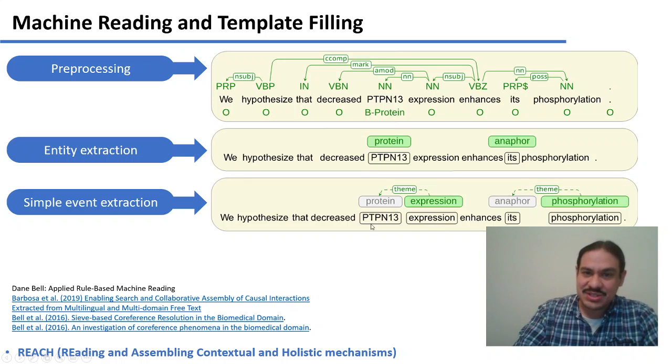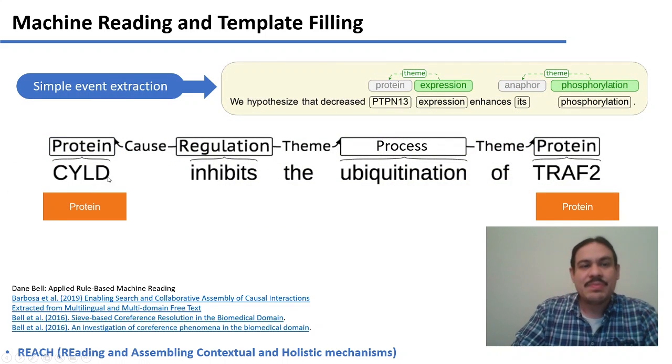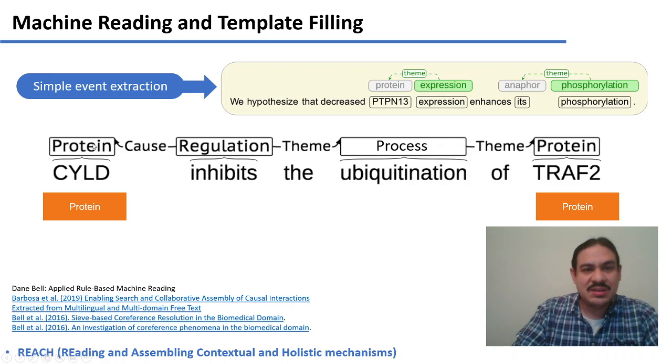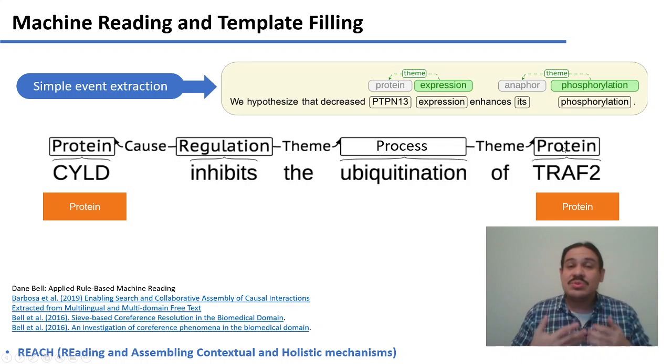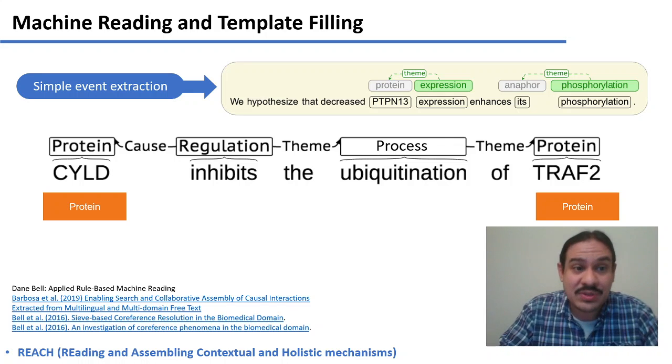Once you have these entities and the relationships between them, you can begin filling out templates. For example, that a certain protein causes a certain regulation of a certain process of a different protein. So you can use regular expressions to try to fill out a template about what proteins are doing or what kind of processes they're involved in.